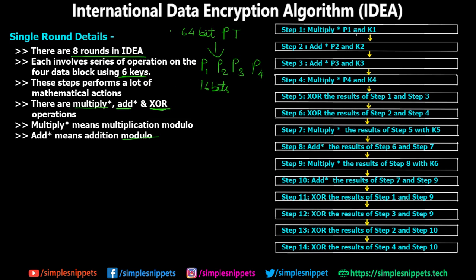Step 1: multiply modulo P1 and K1. Step 2: add modulo P2 and K2. Step 3: addition modulo P3 and K3. Step 4: multiply modulo P4 and K4. Step 5: XOR the result of step 1 and step 3. Step 6: XOR the result of step 2 and step 4. Step 7: multiply modulo the result of step 5 with K5. Step 8: addition modulo the result of step 6 and step 7.